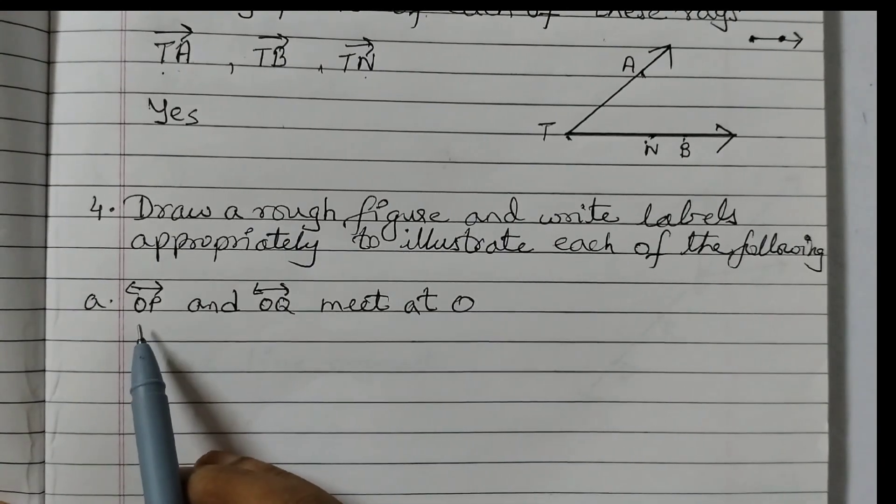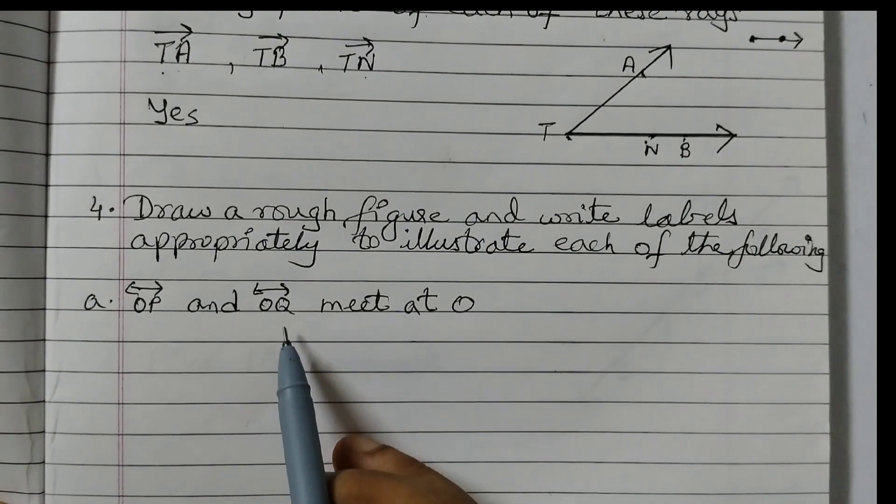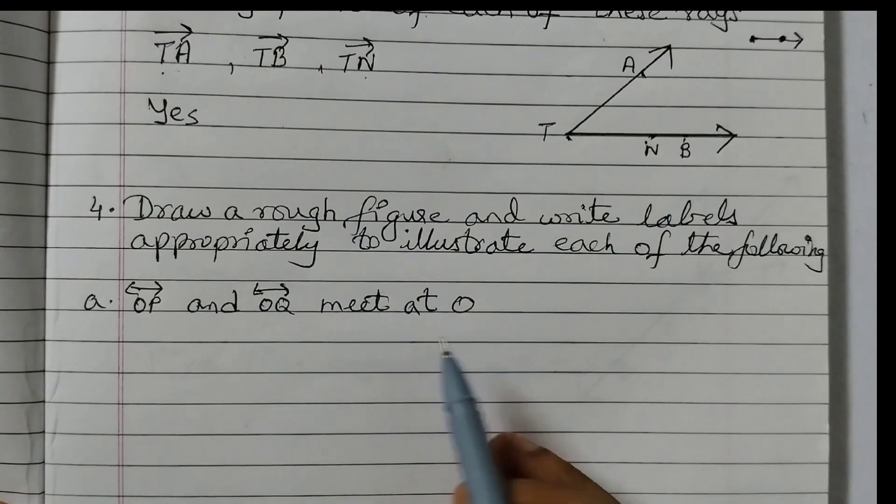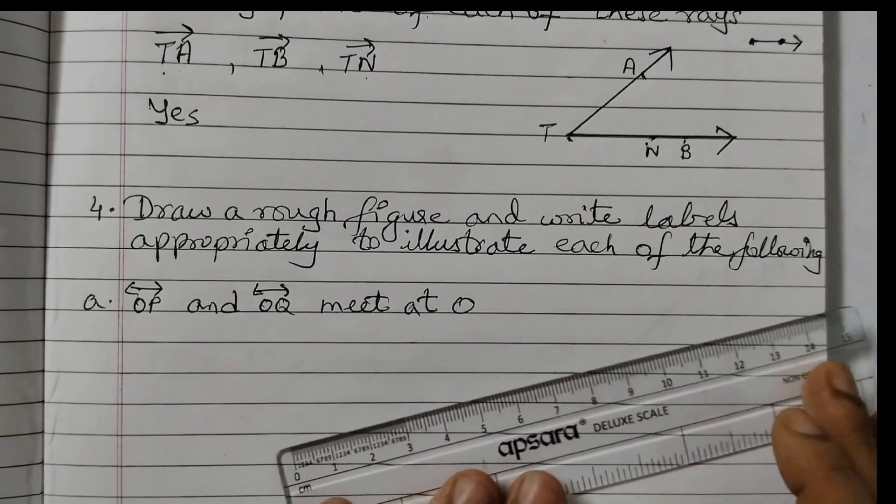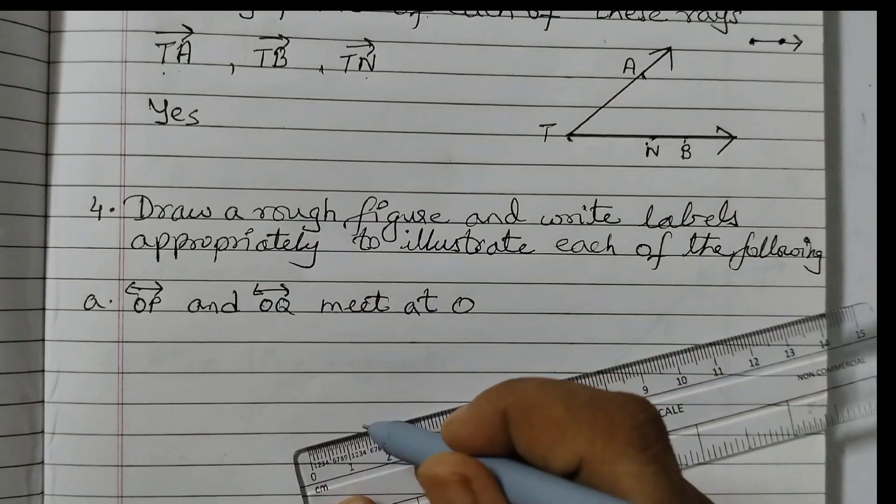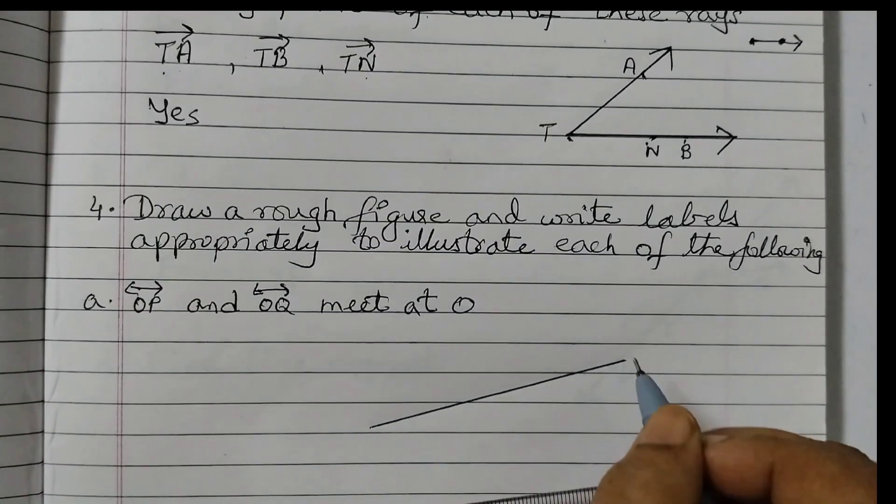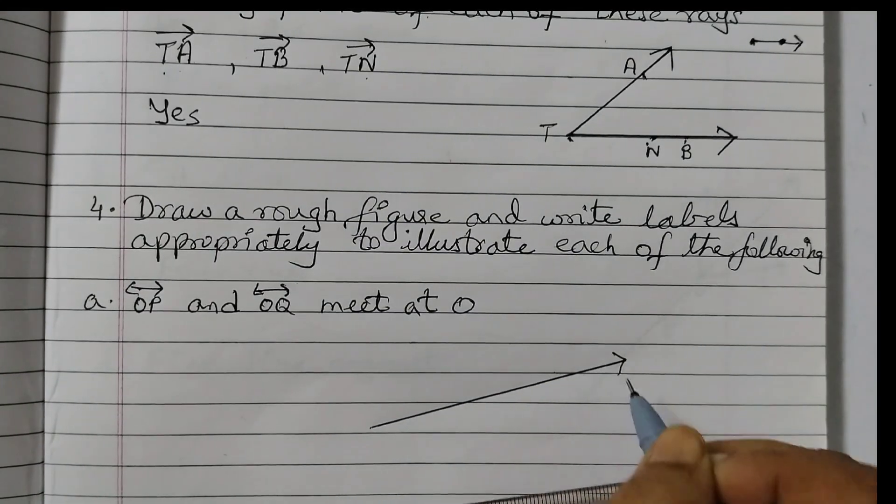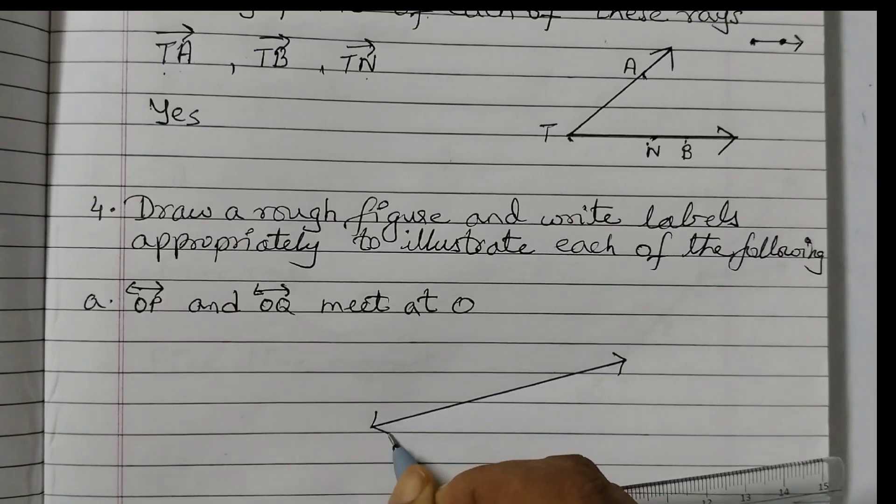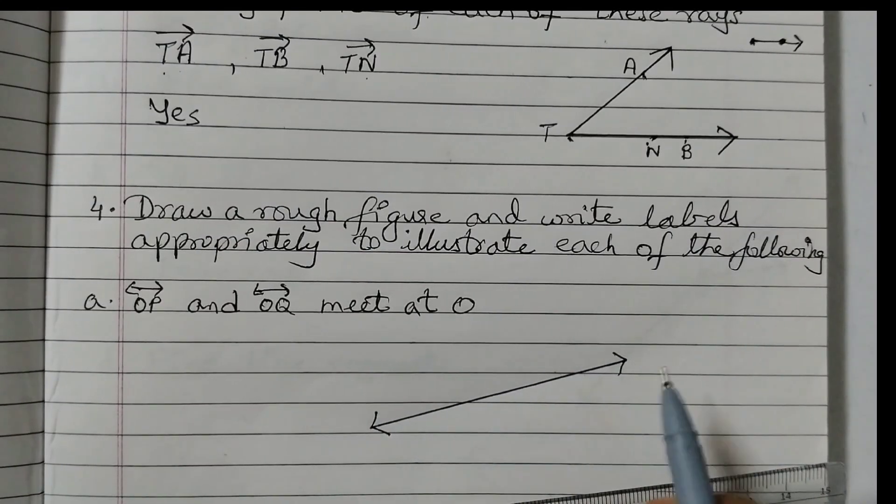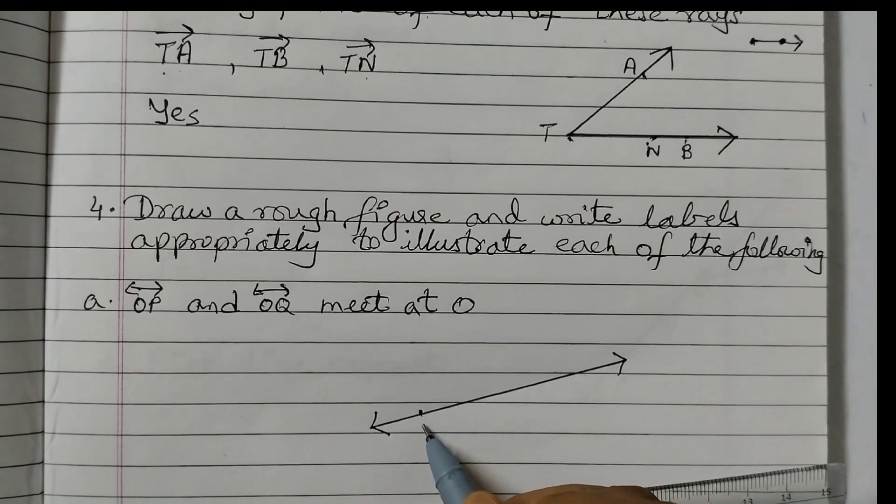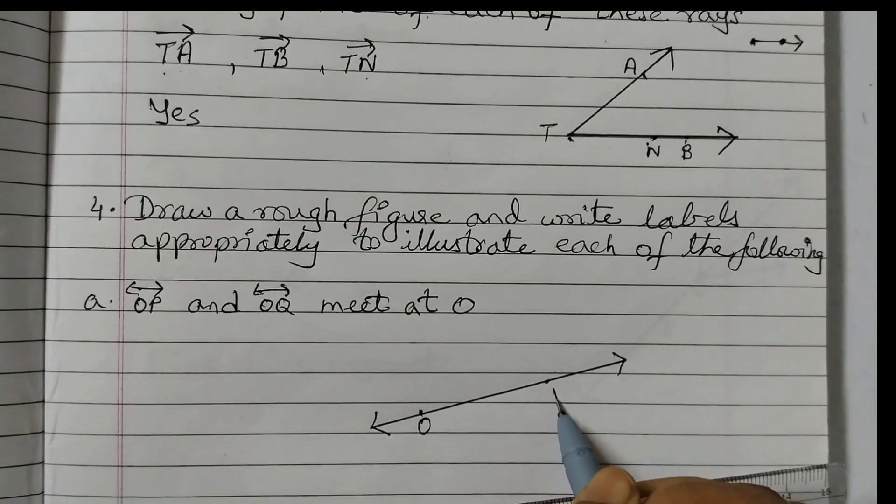The first one is line OP and line OQ meet at O. So first we will draw line OP. You can draw anyhow line OP. This is line OP and put an arrow head both sides. This is very important. You need to put arrow head both the sides. And then you can put a point here as O and here P.